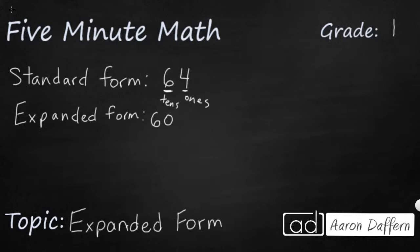And these 4 ones, well, they're just worth 4. So expanded form lets you see the value of each digit by adding them all together. So 64 is the same as 60 plus 4.